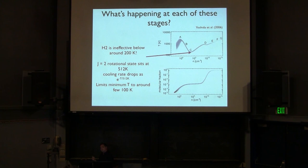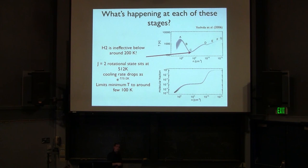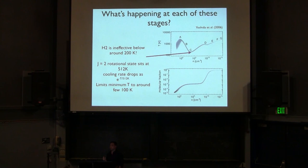The temperature and density at this inflection point set the Jeans mass in the halo, which determines the characteristic fragmentation mass and therefore the characteristic stellar mass. At this temperature and density the Jeans mass is about 500 solar masses — much higher than in present-day star formation. The higher temperatures also mean a higher accretion rate. So people have argued that because of this high Jeans mass and high accretion rate, Population 3 stars should be very massive.